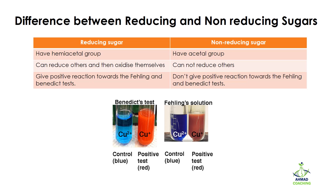Reducing sugars can be checked using different tests. They give positive results with Fehling's and Benedict's reagents. In the Benedict's test, copper metal is present in solution. If the blue color changes to red, it means a reducing sugar is present. If the blue color is retained, it means a non-reducing sugar is present.